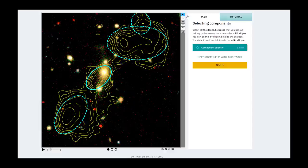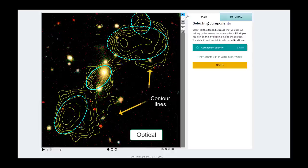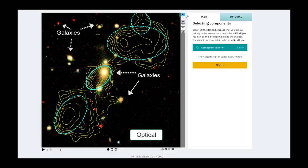Now let's talk about what we are looking at. The image in the center of your screen is made up of different parts: the optical image in the background, the yellow contour lines showing the radio emission, and finally the blue ellipses. The optical background image will be mostly black with some white shapes. The white shapes that you are seeing are galaxies and in some cases stars.